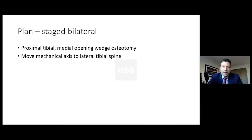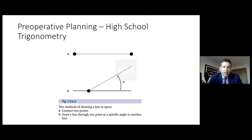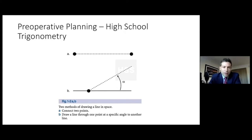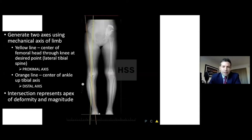We're going to plan the case by moving the mechanical axis to the lateral tibial spine. This diagram is from Paley's textbook — it basically says angles are formed by the intersection of two lines, and lines are formed by the intersection of two dots. So for deformity correction, whether you're doing virtual CAD-like software planning or just mechanical or analog planning, you still need to understand how to draw these axes. Even with the new hexapod softwares, drawing the axis is very important.